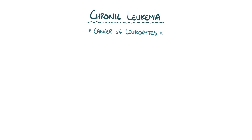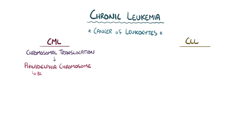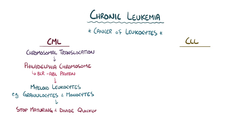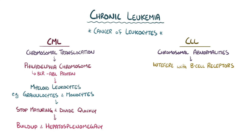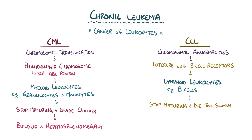As a quick recap: chronic leukemia is a cancer of the leukocytes that includes both chronic myeloid leukemia (CML) and chronic lymphocytic leukemia (CLL). In CML, chromosomal translocation results in a Philadelphia chromosome, which codes for a protein called BCR-ABL, causing myeloid leukocytes like granulocytes and monocytes to stop maturing and reproduce too quickly. In CLL, a variety of chromosomal abnormalities interfere with the pathways of B cell receptors, causing lymphoid leukocytes like B cells to stop maturing and die too slowly, building up mainly in the lymph nodes causing lymphadenopathy. Both types cause a loss of normal blood cells, resulting in anemia, thrombocytopenia, and leukopenia.